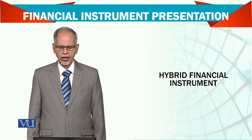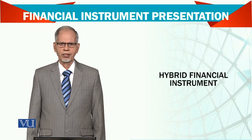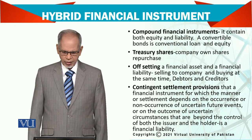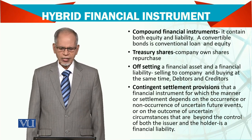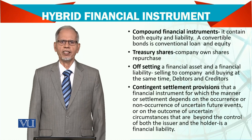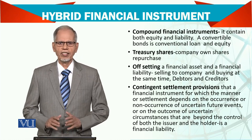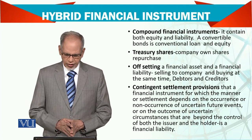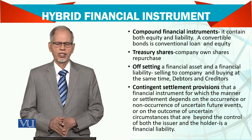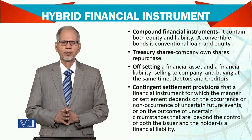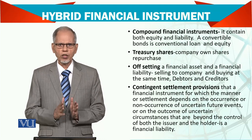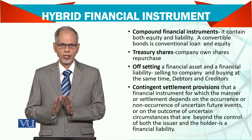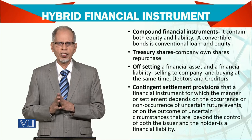This is what we call hybrid financial instruments, sometimes also called compound financial instruments. A compound financial instrument contains both equity and liability at the same time. A convertible bond is both a conventional loan and equity. If you issue a convertible bond, you are authorizing the bondholder to convert it into equity — it is their choice, not the company's choice.